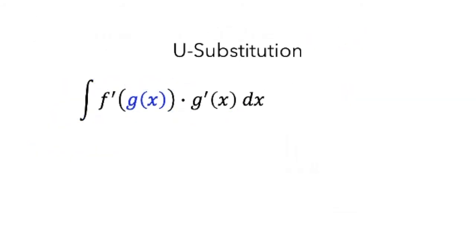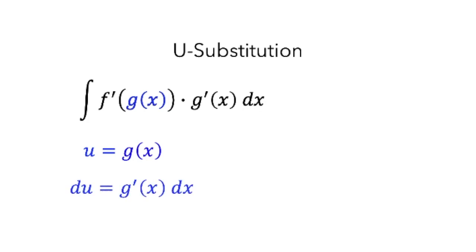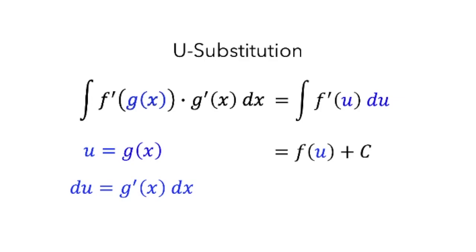This technique helps us compute integrals of some functions that initially look complicated, such as composite functions. In this technique, we call one of the terms u, differentiate u with respect to x, and use this to rewrite the original integral in terms of a function for which we know an antiderivative, then substitute our original function back in. Like other techniques, u-substitution takes some practice, but it is useful for expanding our ability to compute integrals.